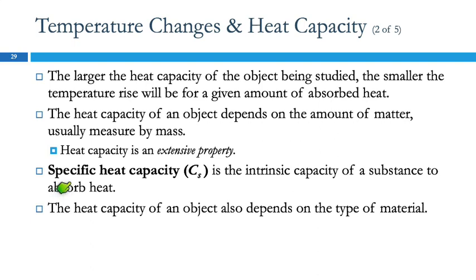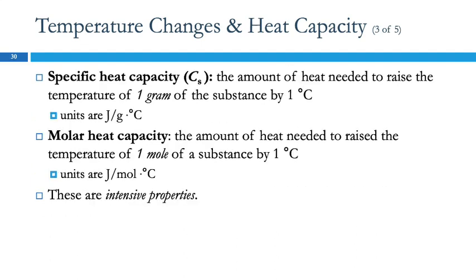Heat capacity is an extensive property. It depends on how big that sample is. That's not as useful. So what we use more frequently is called the specific heat capacity, C with a subscript S. And this is an intensive property. It's the intrinsic capacity of a substance to absorb heat. We also see that heat capacity and specific heat capacity depend on the type of material that an object consists of. So specific heat capacity: the amount of heat needed to raise the temperature of one gram of the substance by one degree Celsius.